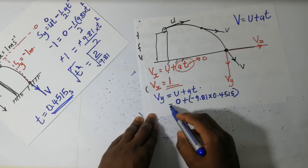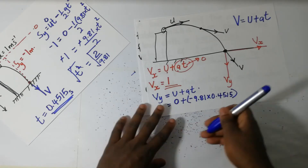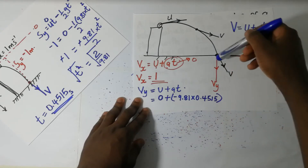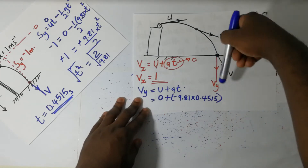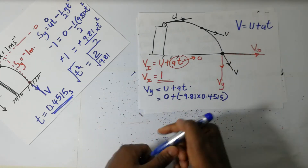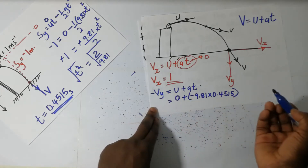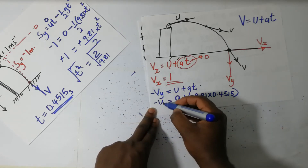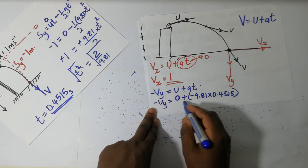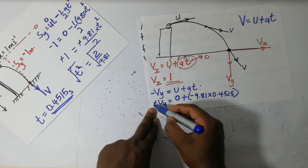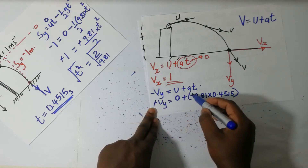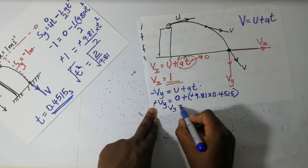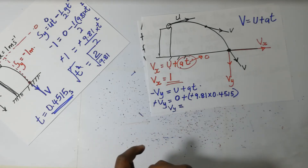This gives us the value of vy. Note that vy is pointing downward — in the negative direction — so we have negative vy on the left side. The negatives cancel, and we get vy equal to 9.81 times 0.4515, which gives vy equal to 4.431 meters per second.